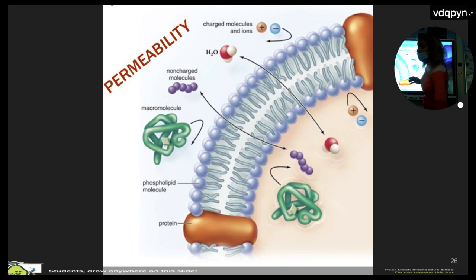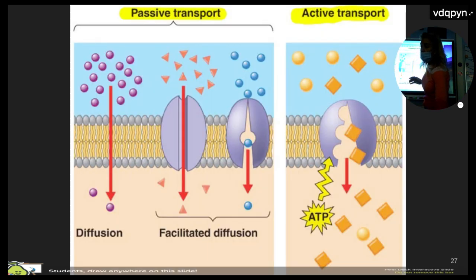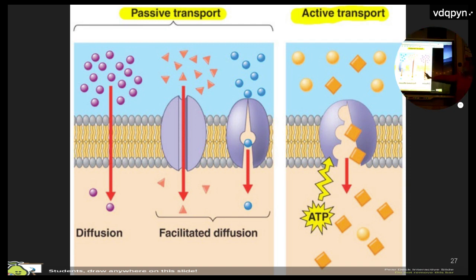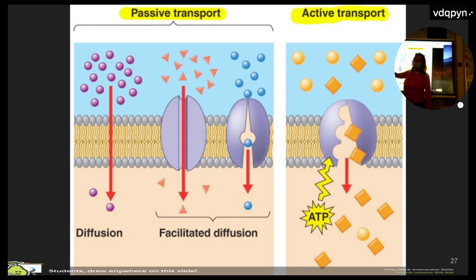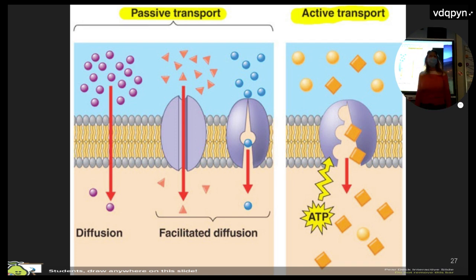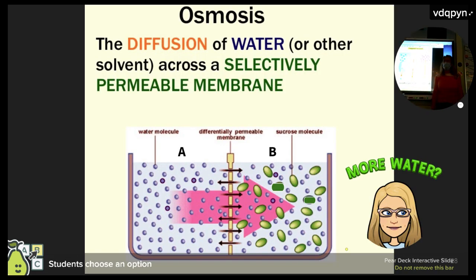Diffusion is movement from high to low concentration. Using a protein to go from high to low is facilitated diffusion. If it costs ATP it's active transport. You could use a carrier or whole membrane. Anything that doesn't cost ATP is passive; anything that costs ATP is active.